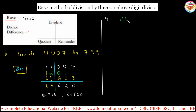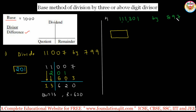Let me take a bigger number. 111,301 divided by 897. Immediately identify the base: 1,000 is the base since 897 is near to it. Now calculate the difference: 897 is near 900, which is 3 less, plus 100 more — so 1,000 minus 897 equals 103. So 103 is the difference.